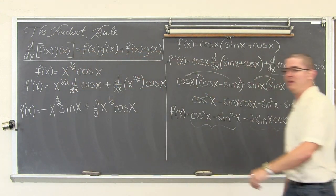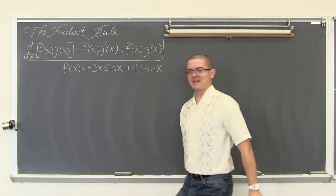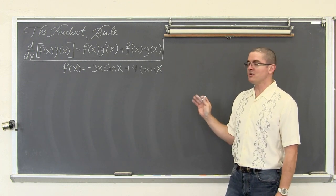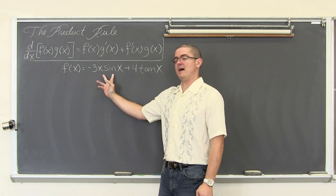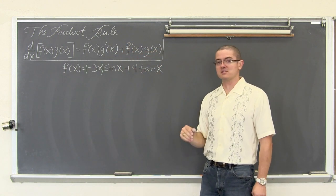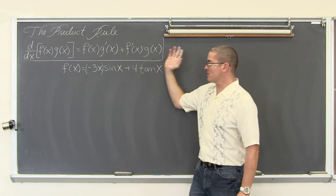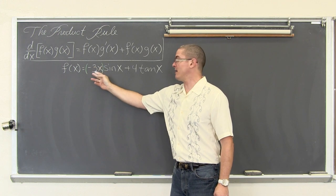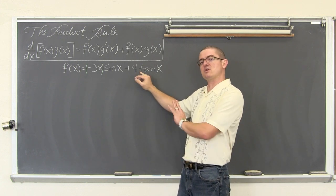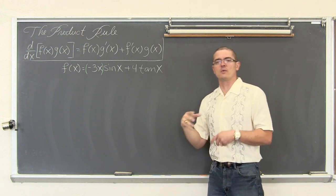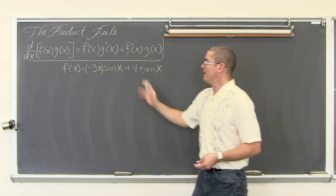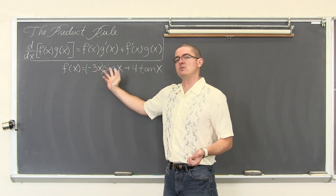Last example: f of x equals negative 3x sine of x plus 4 tangent of x. This example has one term where we must use the product rule — negative 3x times sine x — and a second term with a constant times a trig function, where we use the constant rule. You could use the product rule for the second term too, but you will get the same answer with more work. So we use the product rule for the first term and the constant rule for the second.